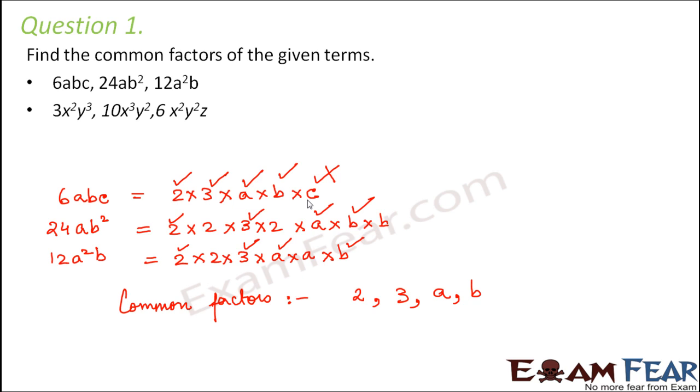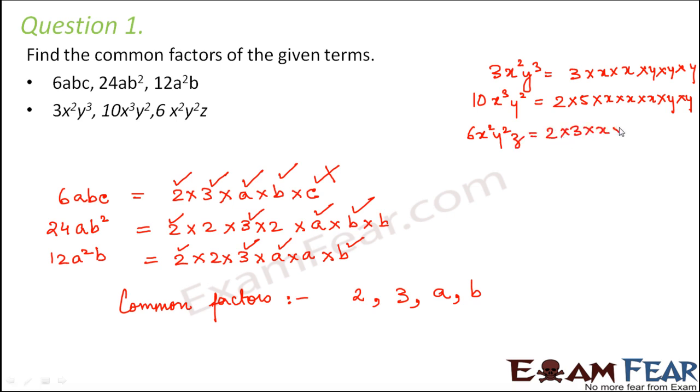So let's look at the next set of three terms. So here we have 3x²y³. So this can be written as 3 into x into x into y into y into y. The next term is 10x³y². So this can be written as 2 into 5 into x into x into x into y into y. The third term is 6x²y²z, which can be written as 2 into 3 into x into x into y into y into z.